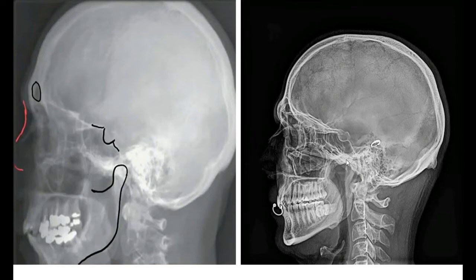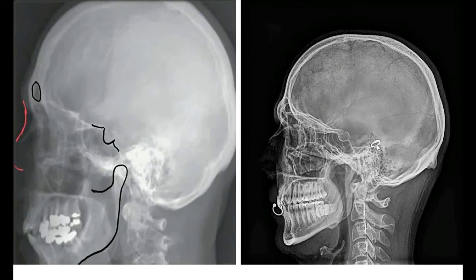The condylar process articulates with the mandibular fossa of the temporal bone, forming the temporomandibular joint. Going further back, there is a highly opaque structure — the petrous part of the temporal bone — where the external acoustic meatus can be found. Behind the auricle are small air-filled spaces: the mastoid air cells.